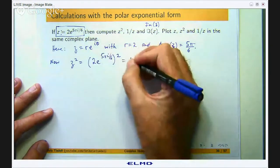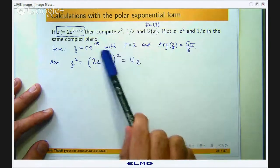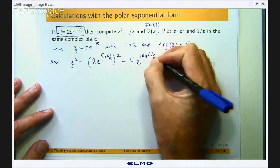It will be 2² which is just 4 times e^(2 times all of this). So that will be 10πi/6.